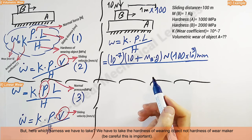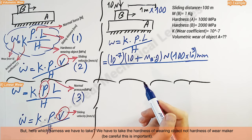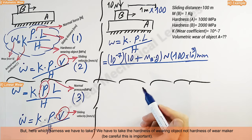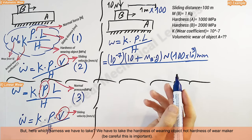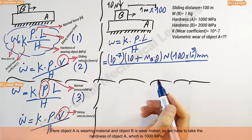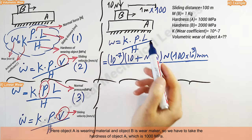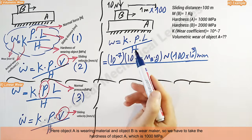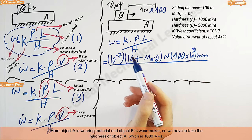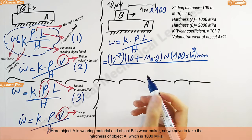But here, which hardness we have to take? We have to take the hardness of wearing object, not hardness of wear maker. Be careful, this is important. Here object A is wearing material and object B is wear maker. So we have to take the hardness of object A, which is 1000 megapascal.